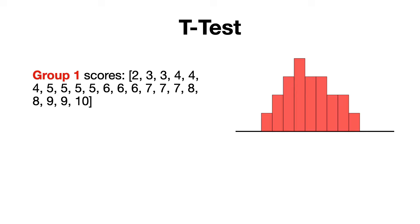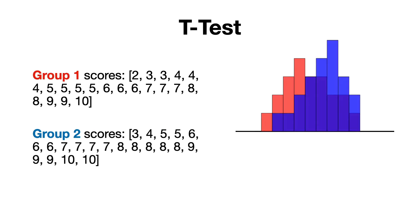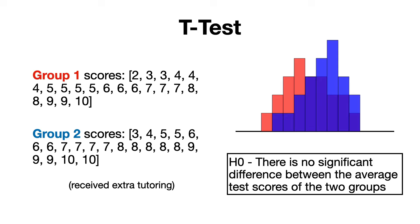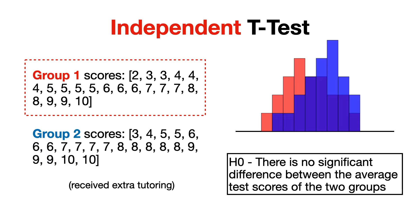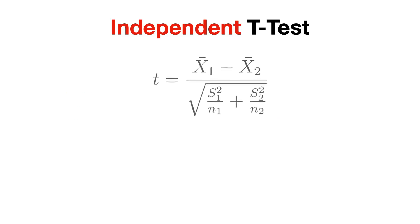For example, let's imagine that we have two groups of students, and we want to know if there is a significant difference in their scores. One group received extra tutoring and these are their scores, while the other didn't and obtained these scores. So we have the following null hypothesis, which says there is no significant difference between the average test scores of the two groups. To test this, we use an independent t-test, or two-sample t-test, which is ideal for comparing the means of two independent groups — in our case, the group which received extra tutoring and the group which didn't. And to do that, we use the following formula.